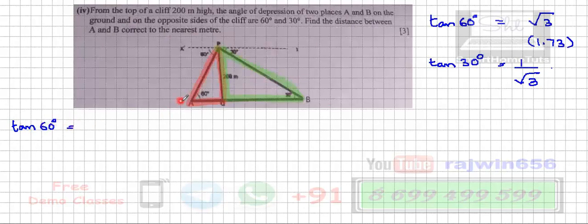Which is in the red triangle, triangle AQP. This is opposite side upon adjacent side. So opposite side is PQ which is 200 divided by the adjacent side is AQ.